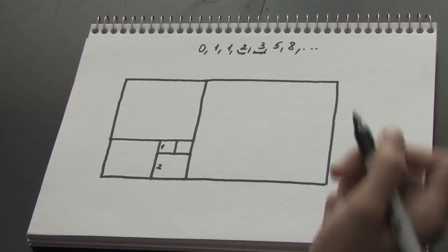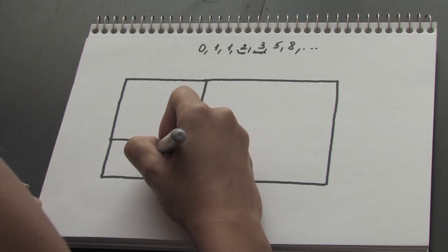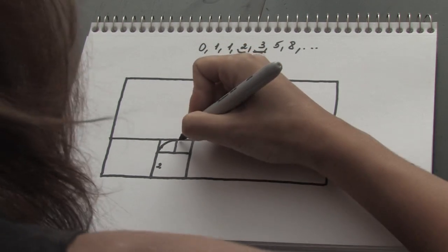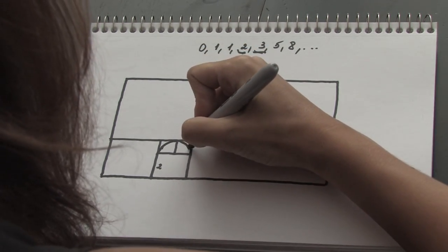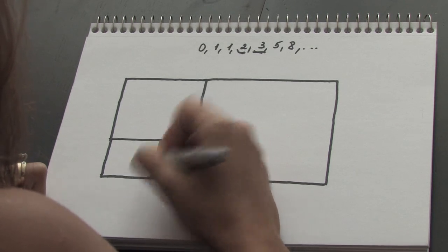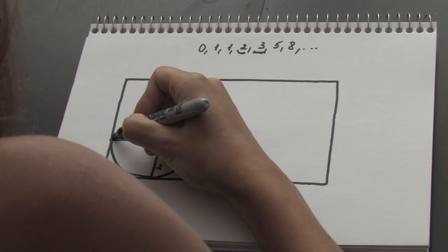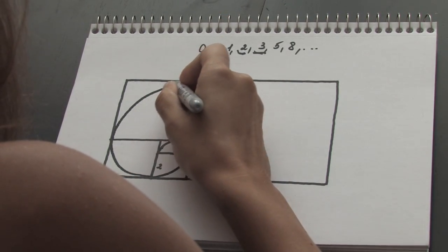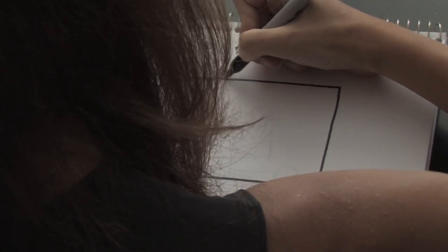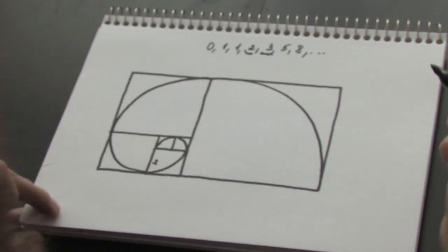Now I'm going to outline my spiral. I start with the first square, and I just draw the curved line like this through each of my squares. This line is very smooth.